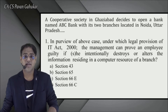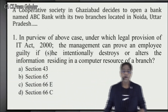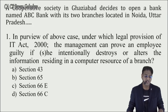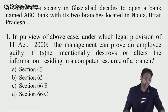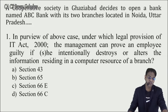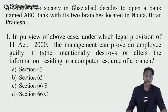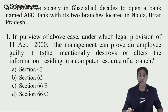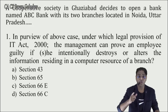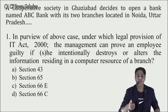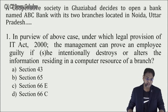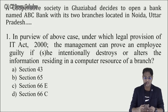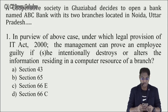First question: Based on the above case study, under which legal provision of IT Act 2000 can management prove an employee guilty if he intentionally destroys or alters information residing in a computer resource of a branch? So, management wants to know under which section they can hold someone accountable for data alteration — which is an integrity issue — or data destruction, which is an availability issue. What do you think the answer is? Please share your answers in the comments.